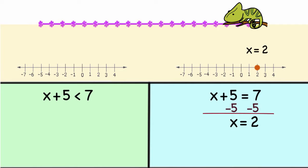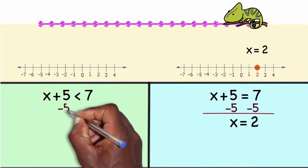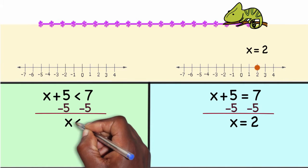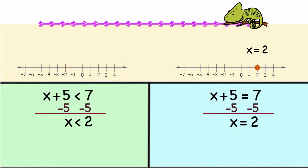For x plus 5 is less than 7 I'm going to add a negative 5 to both sides and then I have 5 plus a negative 5 is 0. 7 plus a negative 5 that's 2. And so I have x is less than 2.